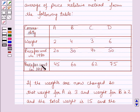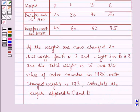The price per unit in 1985 for commodities A, B, C and D is 45, 60, 62 and 75 respectively. Now if the weights are changed so that the weight for A is 3 and the weight for B is 2, the total weight is 15, and the value of the index number in 1985 with changed weights is 173, calculate the weights applied to C and D.